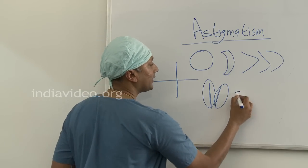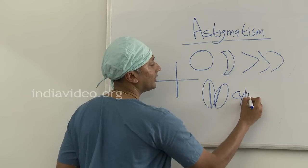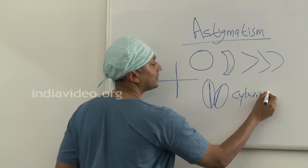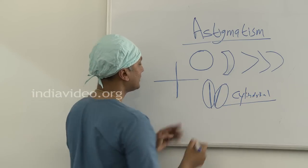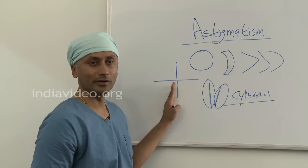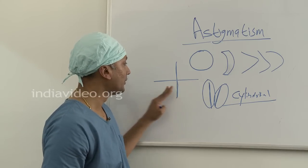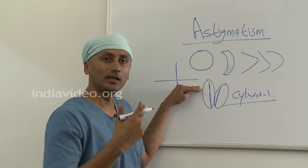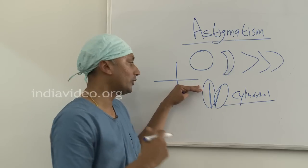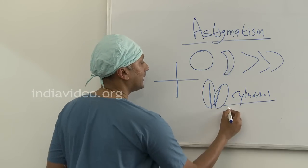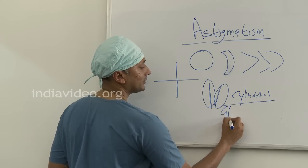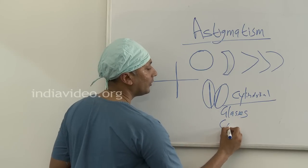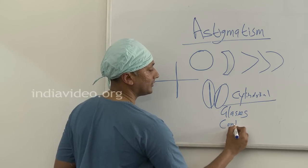This can be corrected with cylindrical lenses. In cylindrical lenses, in one axis there will be normal power or zero, and in the other axis there will be a power for short sight or long sight. This can be given as glasses, which is common, or contact lenses.